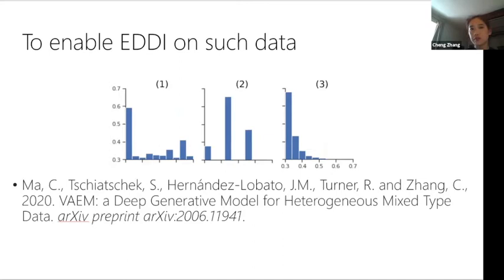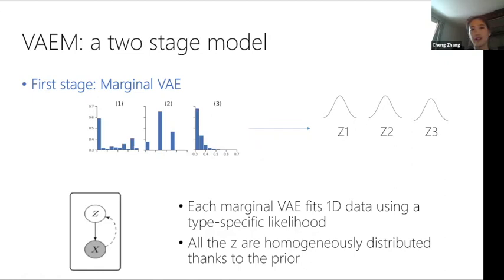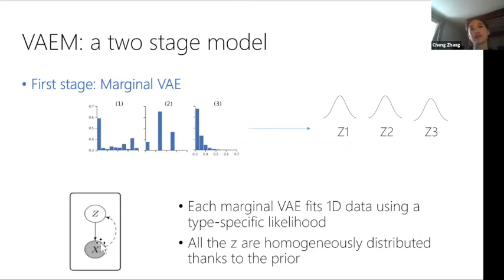To enable the EDDI framework on such real-world data, we propose VAEM — a deep generative model for heterogeneous mixed-type data, where M stands for mixed type. It's a simple two-stage model. The first stage is a marginal VAE: since each dimension is heterogeneous, we use a separate VAE for each dimension, mapping it to a latent space Z. With a Gaussian prior in the latent space, the representation becomes much more homogeneous. You can group features together or use one VAE per dimension.